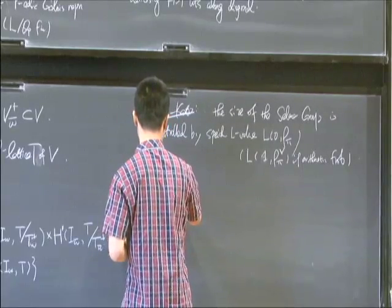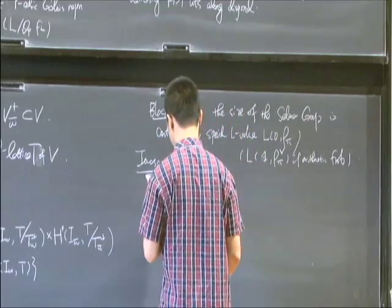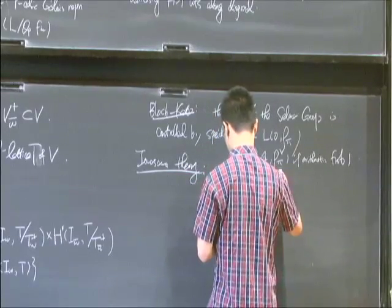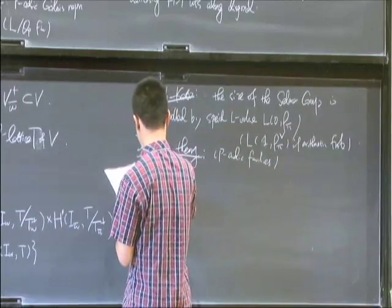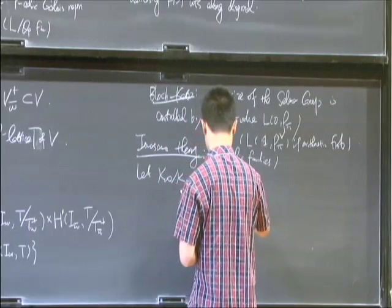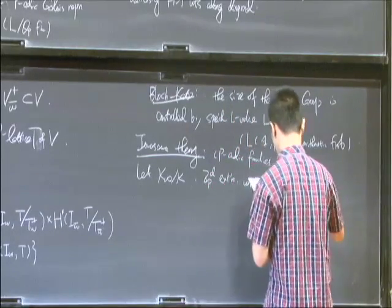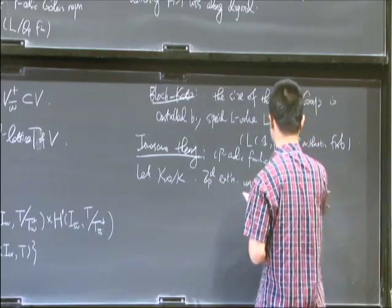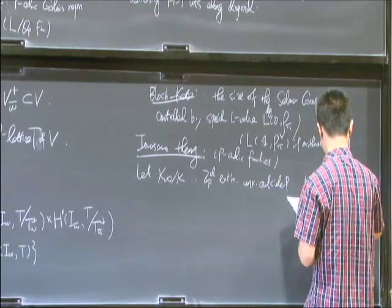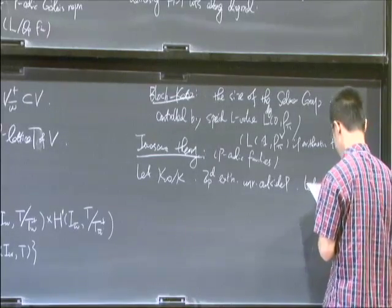Now let's come to Iwasawa theory. Iwasawa theory is to study both the Selmer group and the special L-values in p-adic families. Let K_∞ over K be some Z_p^d extension, unramified outside P. Of course, this is the algebraic part; we need to divide it out by some period. The Iwasawa algebra is defined to be the group algebra of the Galois group, which is some power series ring.